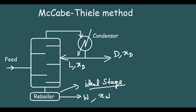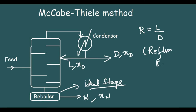Depending on the part of L which is recycled into the distillation column, there is a ratio known as R, which is equal to L by D. This R is known as the reflux ratio.